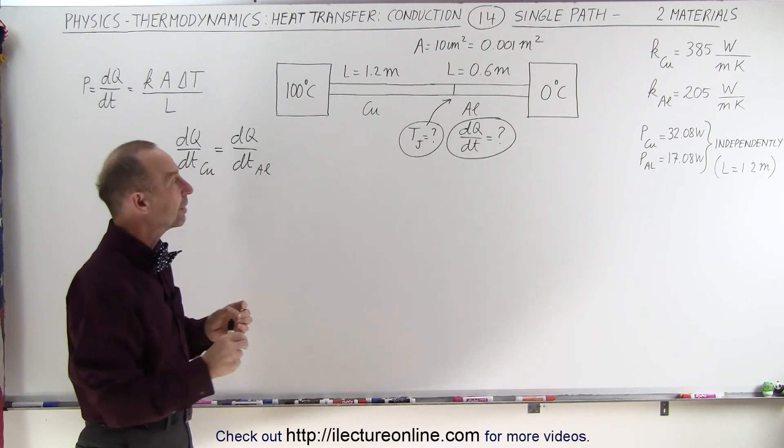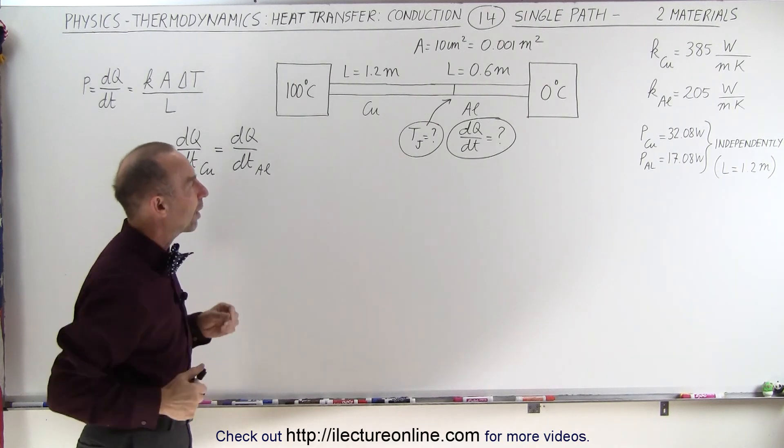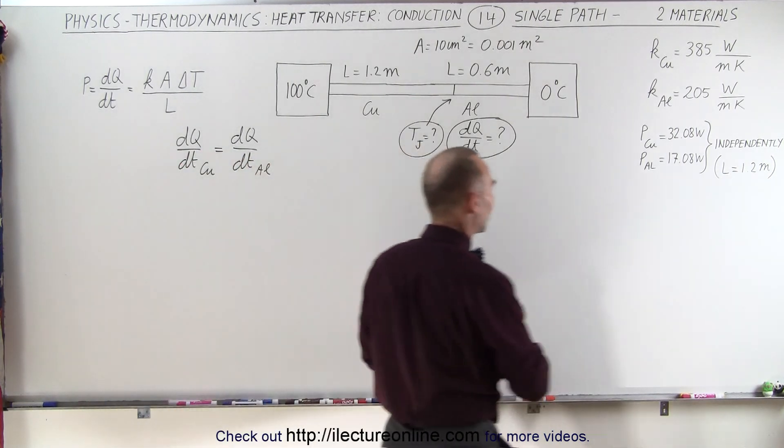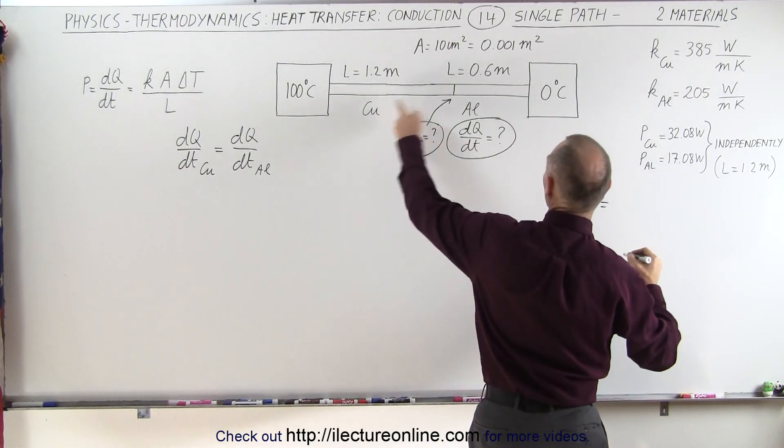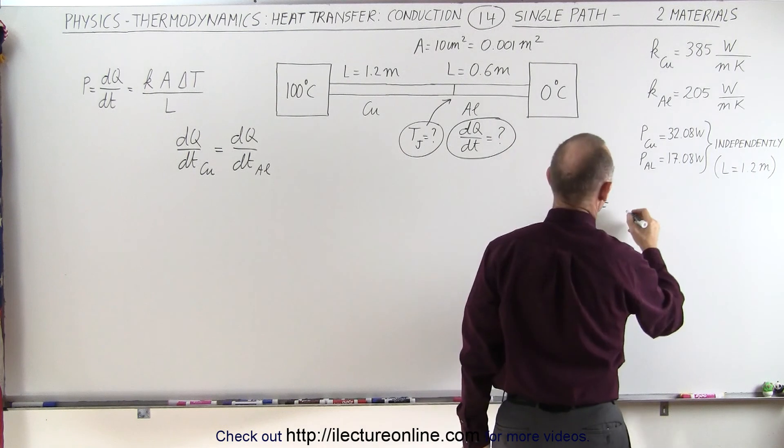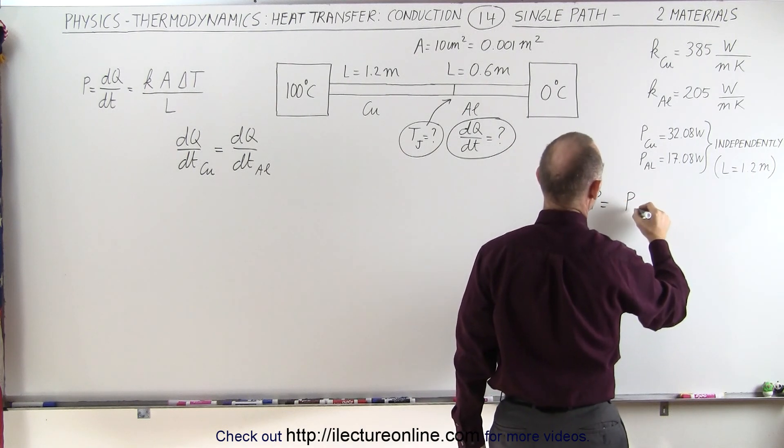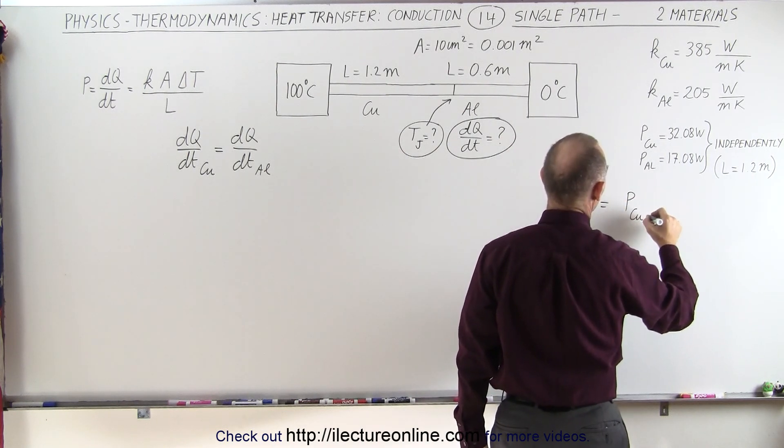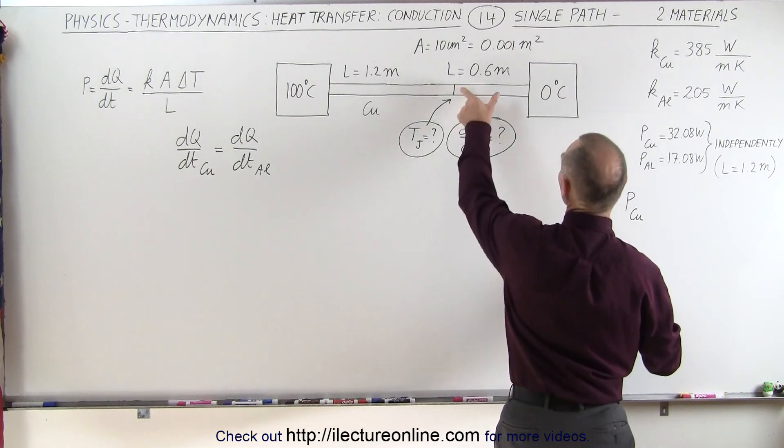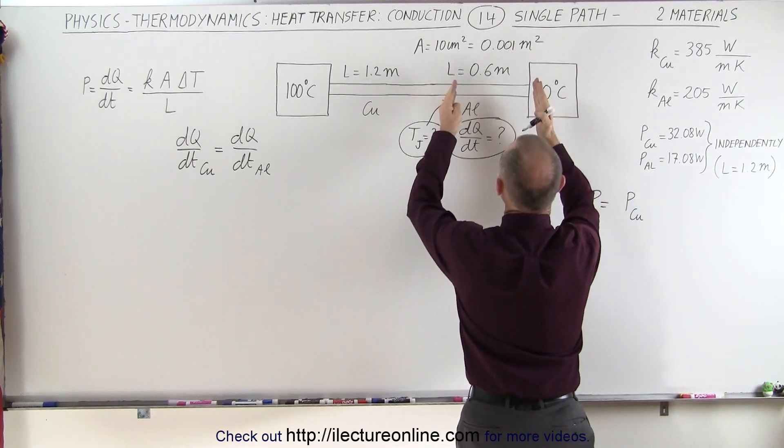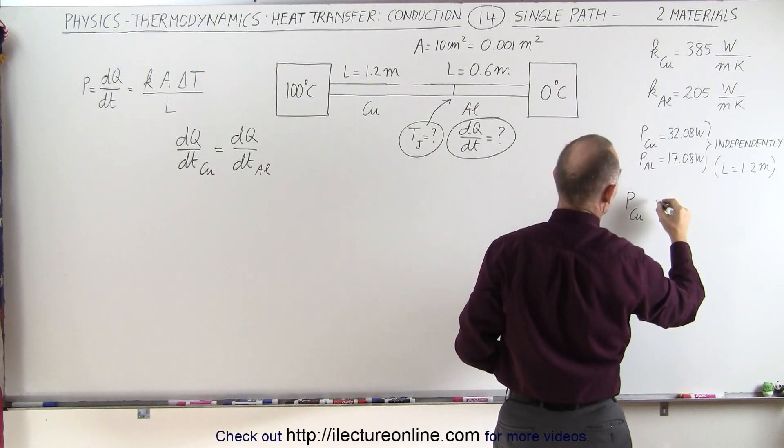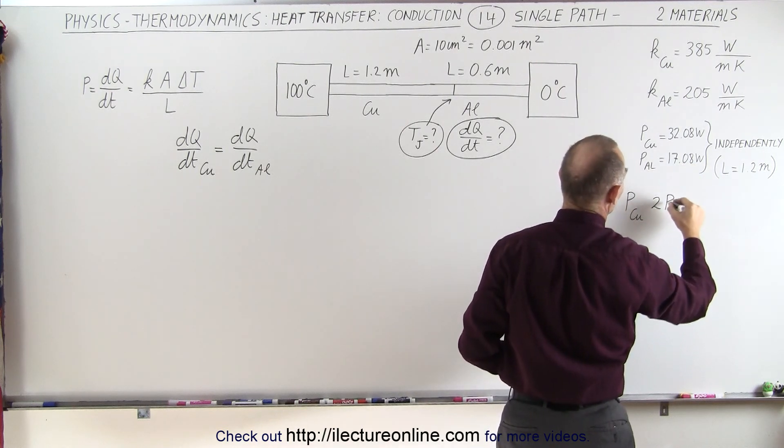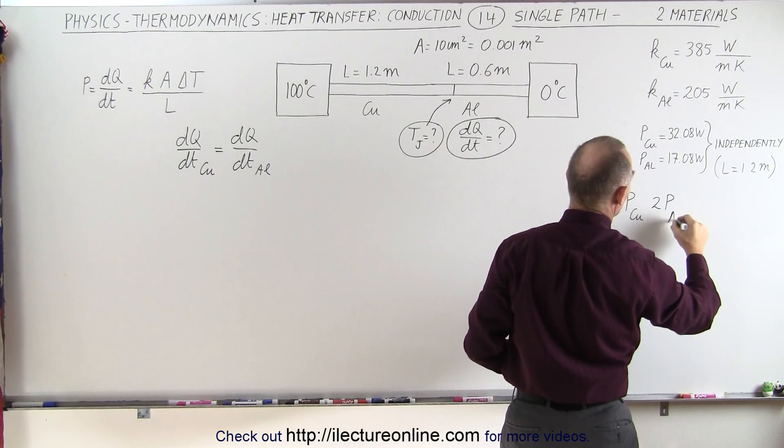So we have our easy method to figure out the heat conducted across that path by using the following equation that the power dissipated across the connection equals the product P1 or P of the copper times, now since the section of aluminum is half the section that it was when we calculated its value, we have to multiply that times two, two times the power carried by the aluminum.